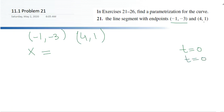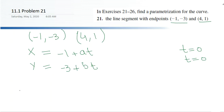At t equals zero, the multiple becomes zero so we are left with the starting point: x equals -1. Similarly for y, we should have something like bt, so that if t is zero this multiple becomes zero and we are left with the y coordinate -3. We have to reach the second point when t equals one.